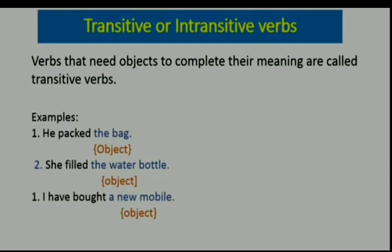Transitive verbs are verbs that need an object to complete their meaning. For example: 'He packed the bag' — 'packed' is the verb, and if we ask 'What did he pack?' the answer is 'the bag,' which is the object. 'She filled the water bottle' — 'water bottle' is the object. 'I have bought a new mobile' — 'a new mobile' is the object. So whenever a verb has an object, it is a transitive verb.